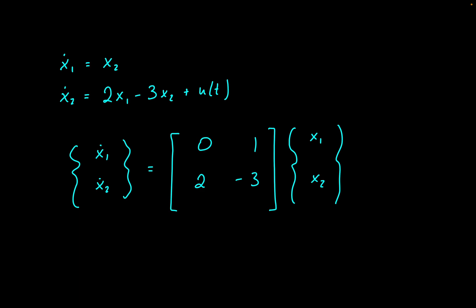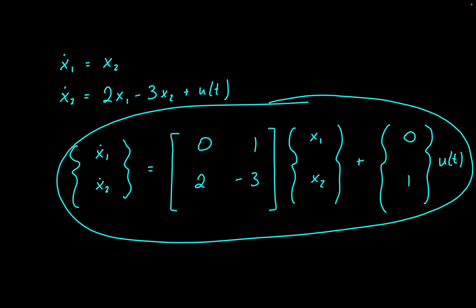And then for the u, that's where our B vector comes in. So we'll essentially have plus, oh, there's a vector. There we go. And then for the first one, so we have no u, right? So that would be a coefficient of 0. But in our second equation, we have 1u. So that would be a coefficient of 1. And then we multiply that by u of t. And then we have our state-space form. So that's pretty much it.